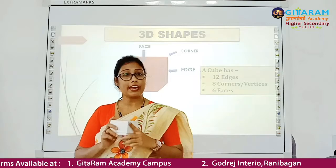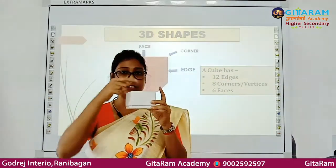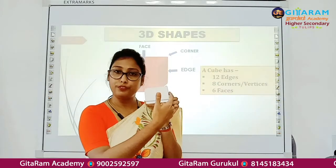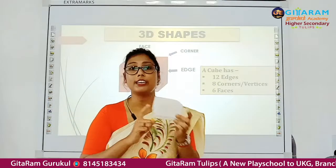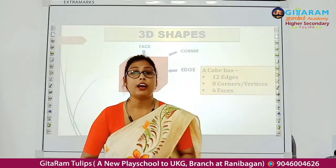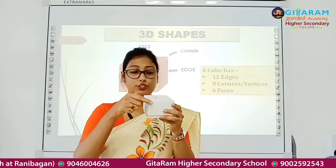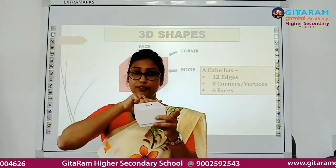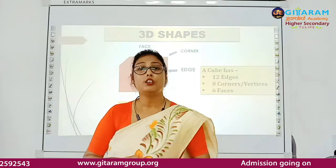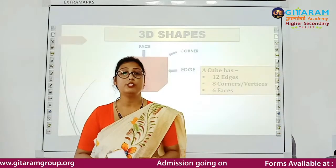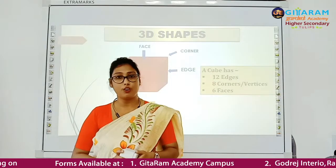So 12 edges. Now 6 faces: 1, 2, 3, 4, 5, 6. And 8 corners or vertices: 1, 2, 3, 4, 5, 6, 7, 8. So a cube has 12 edges, 6 faces, and 8 corners or vertices.